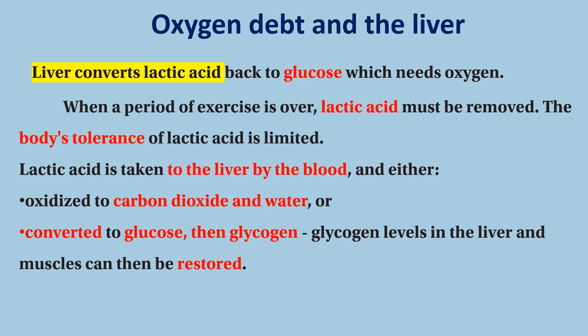If the lactic acid is taken to the liver, it can be processed in the liver — either oxidized to carbon dioxide and water through an oxidation reaction, or converted to glucose then glycogen. Glycogen is stored in the liver.